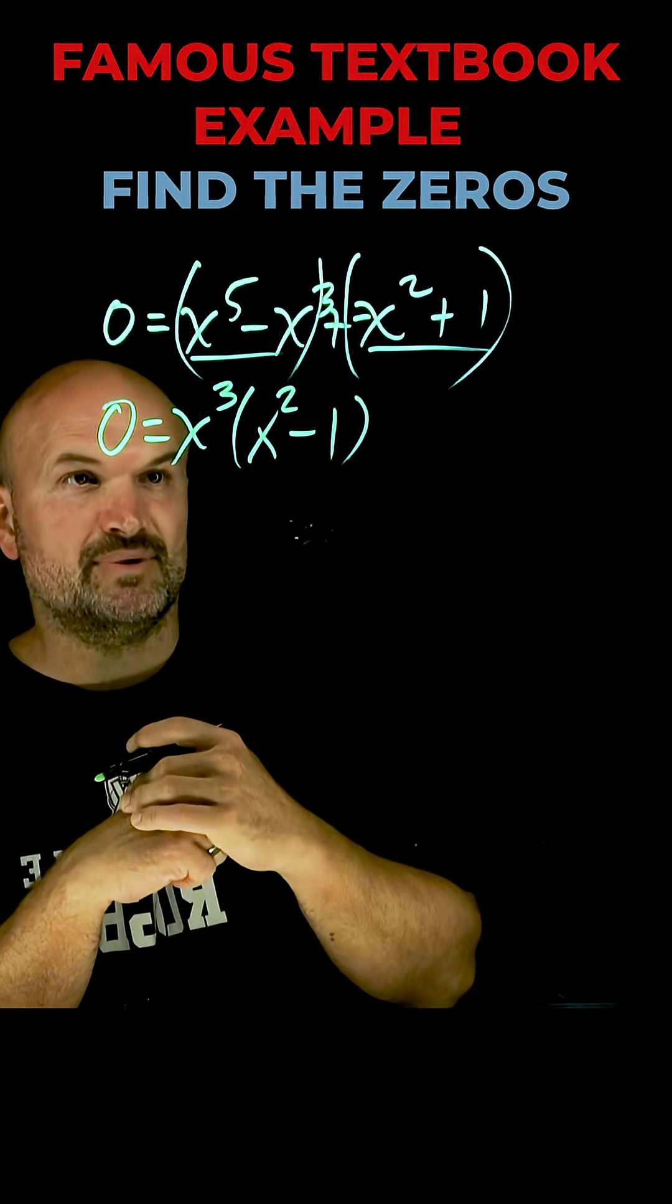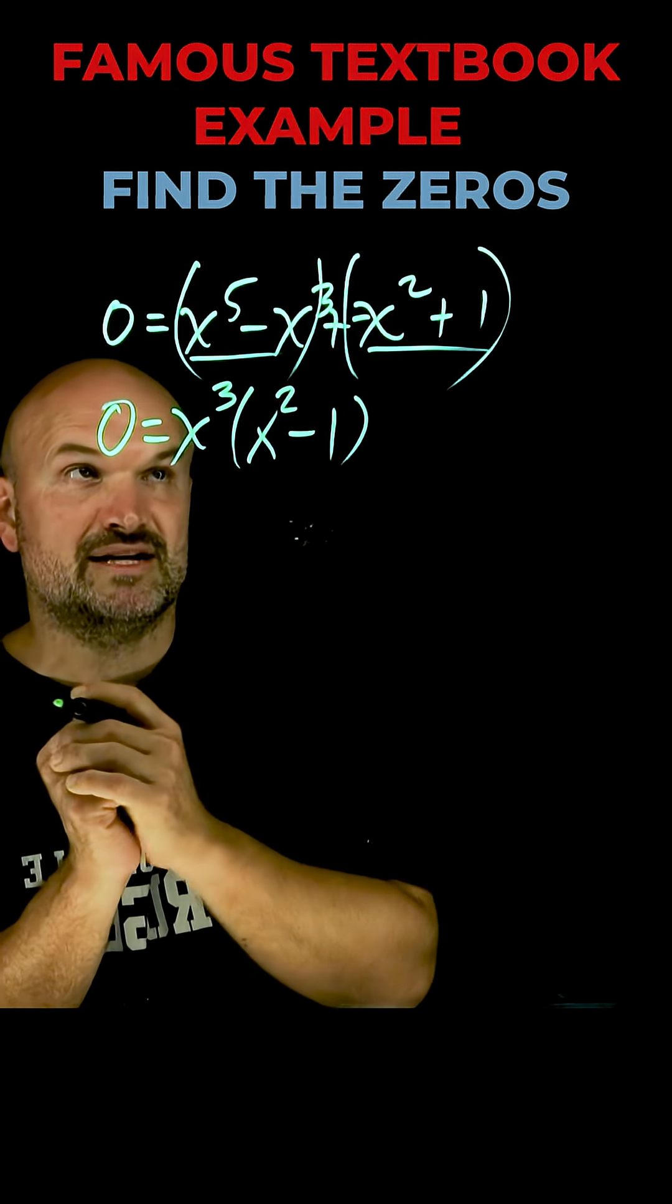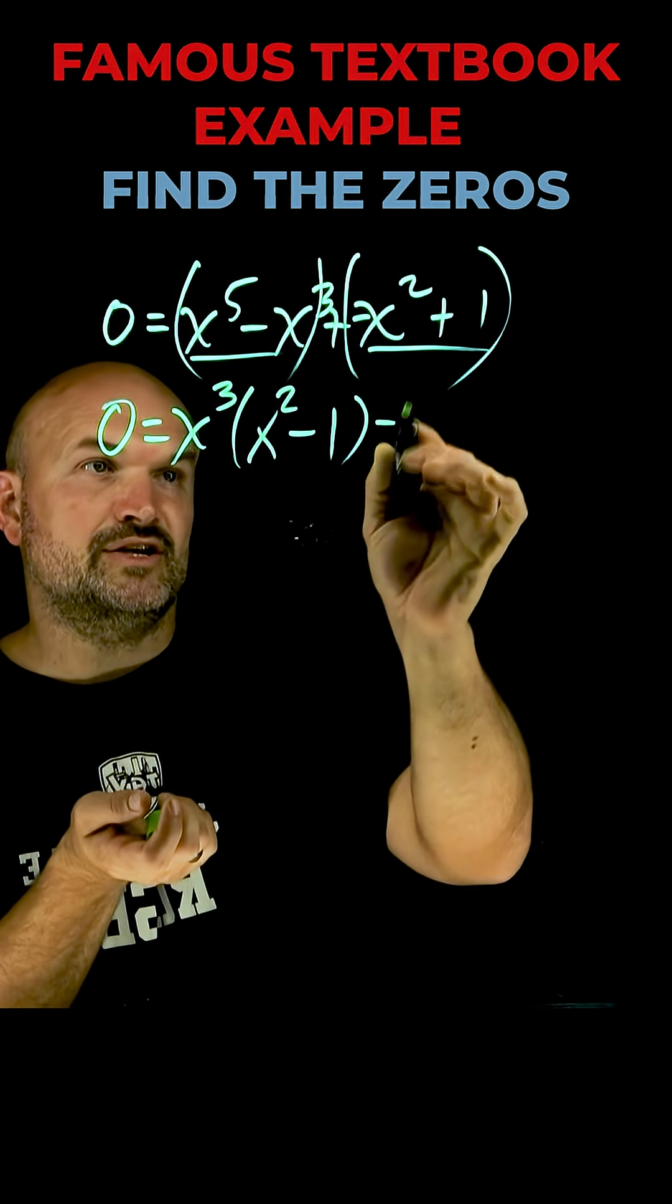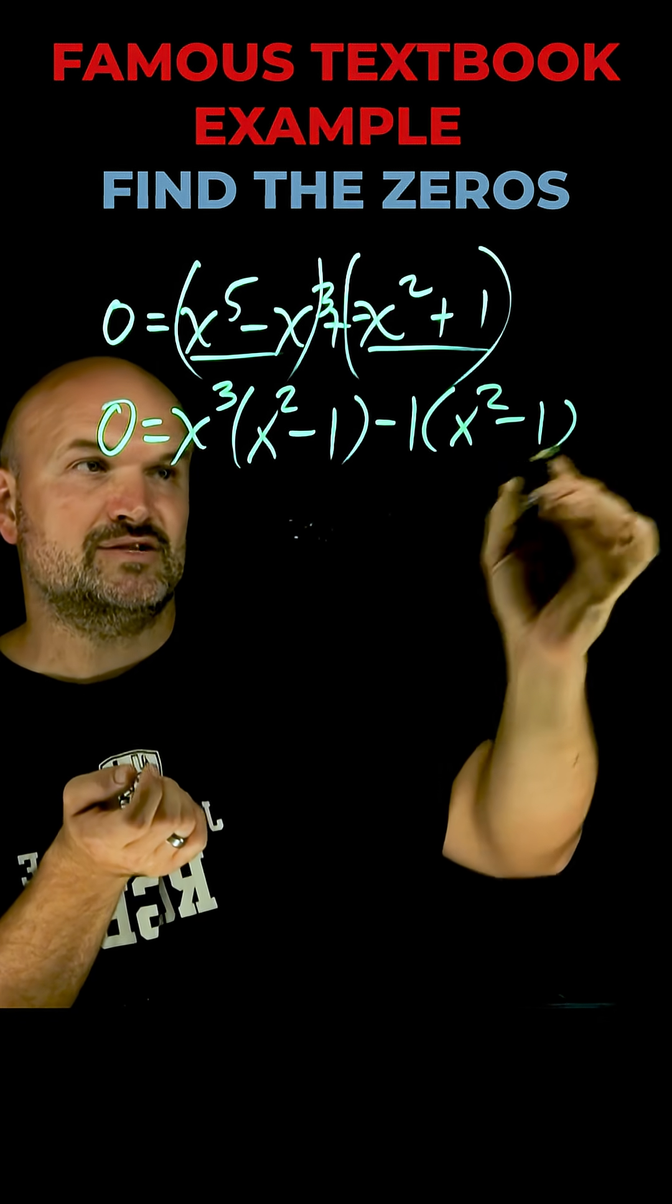Now, when I factor my second parentheses, I want to try to obtain an x squared minus one. It's very similar. So all I simply need to do is factor out a negative one. That's going to give me an x squared minus one.